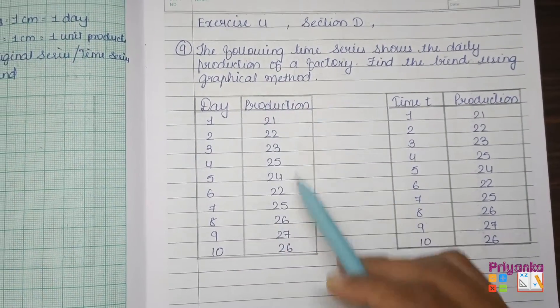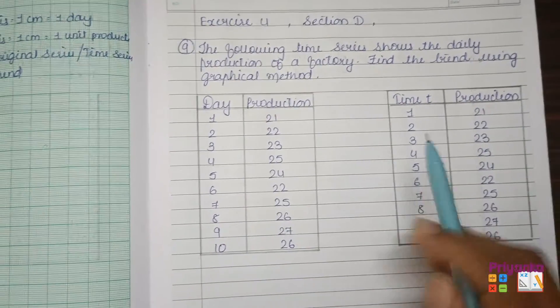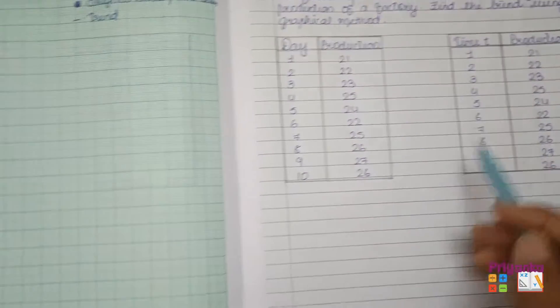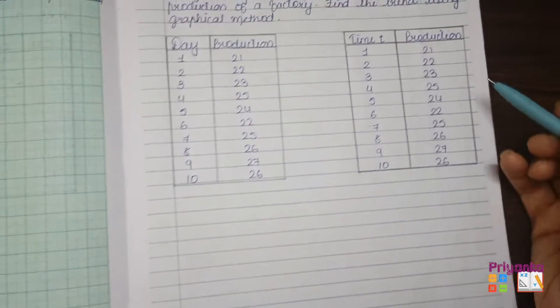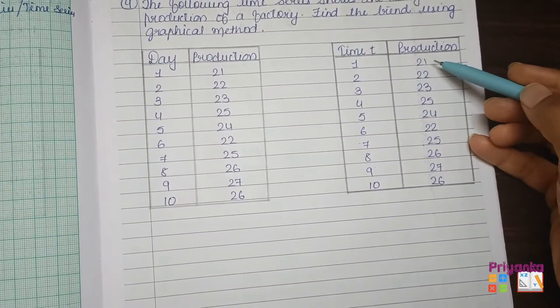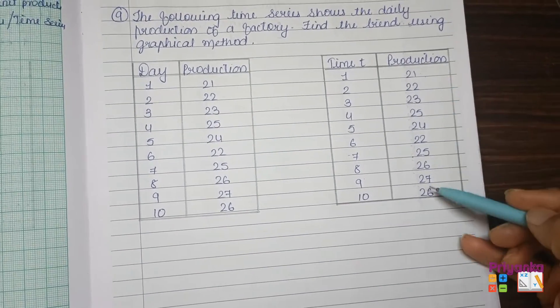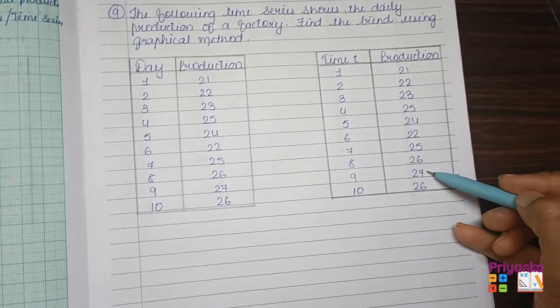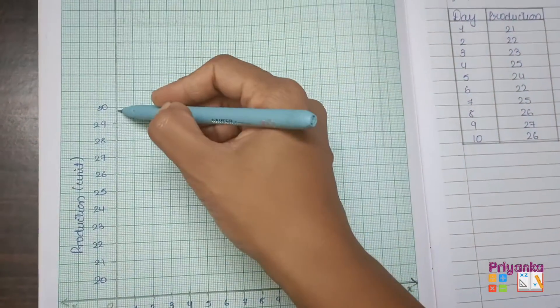For this, the days and the production has been given which has been turned to time. So now time is going to be displayed on the x-axis and the production will be displayed on the y-axis. For looking at the production, just look at the minimum value that is 21 and the maximum here we can see is 27. So here I started the number from 20 till 30.